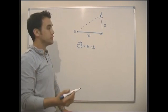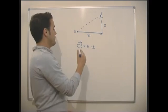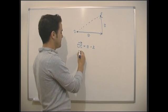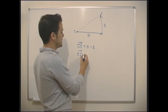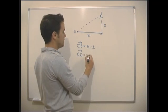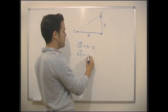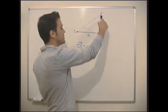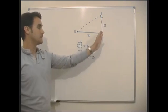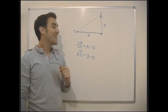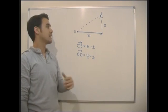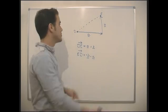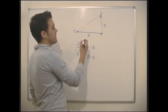No problems at all. What about if we want to go from E to D? If we want to go from E to D we need to go minus b — back down b — then minus a, the opposite of a. So we just go minus b minus a, and that's as simple as vectors are.